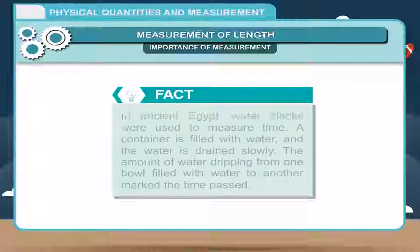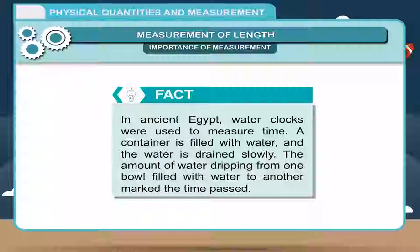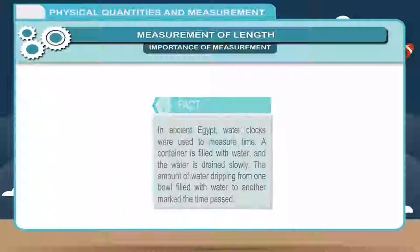Fact: In ancient Egypt, water clocks were used to measure time. A container is filled with water and the water is drained slowly. The amount of water dripping from one bowl filled with water to another marked the time past.